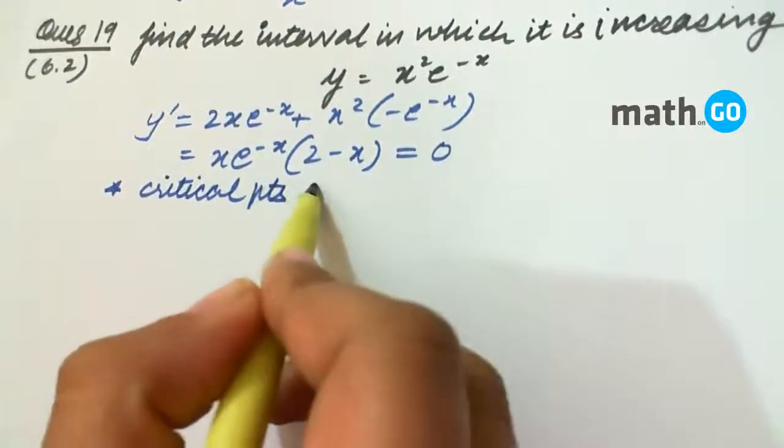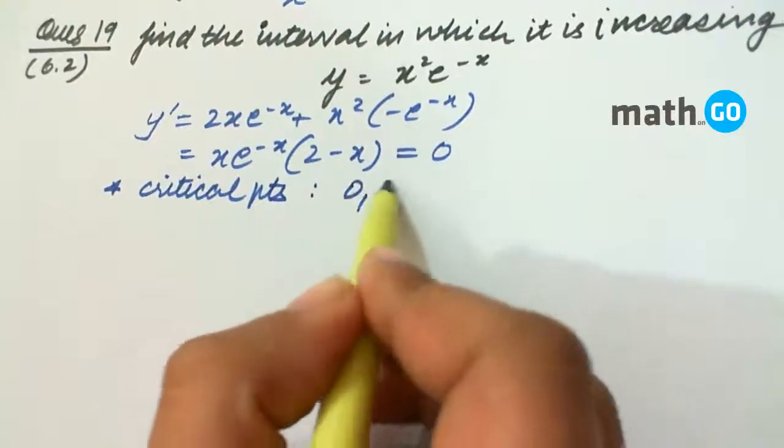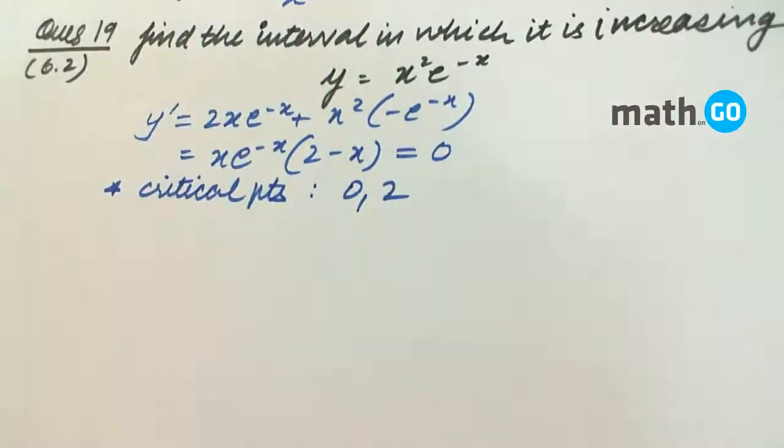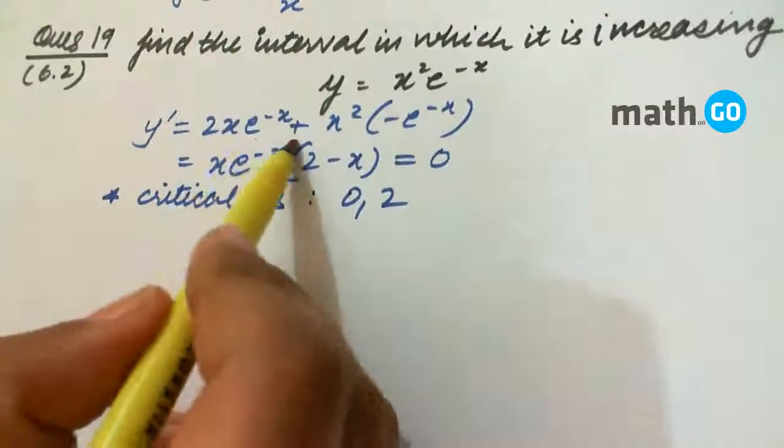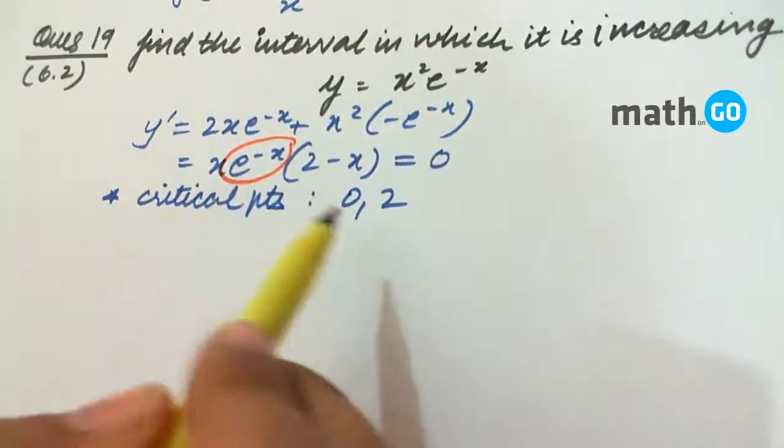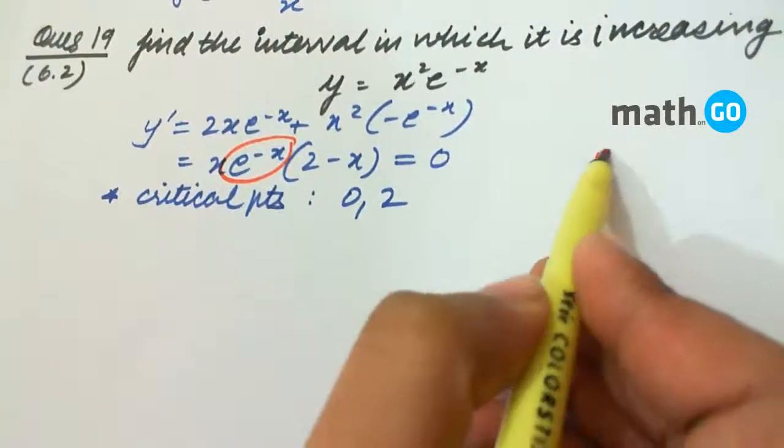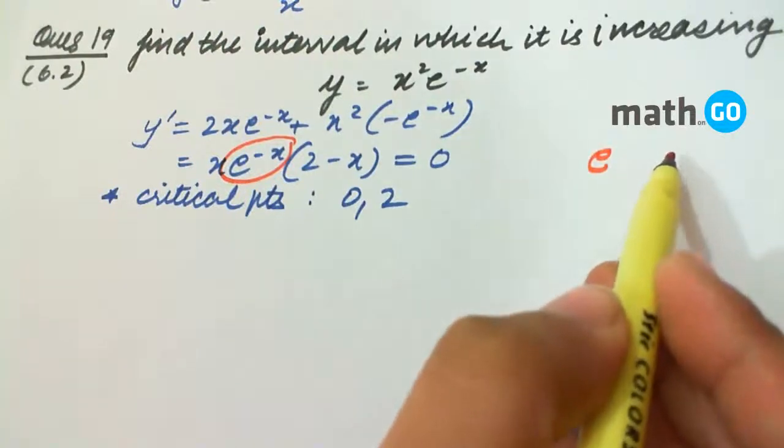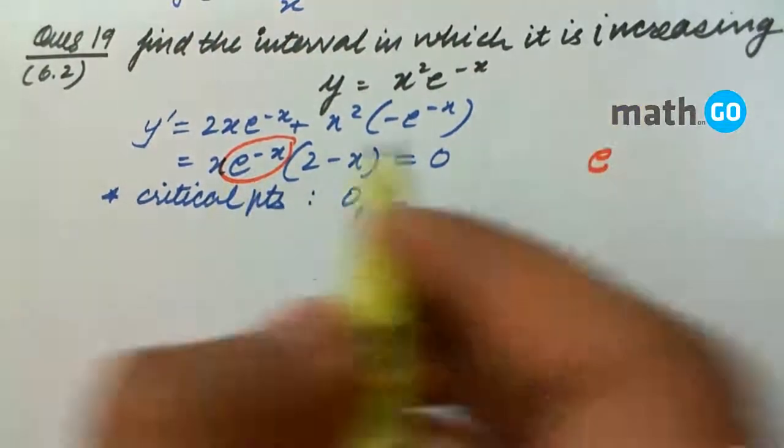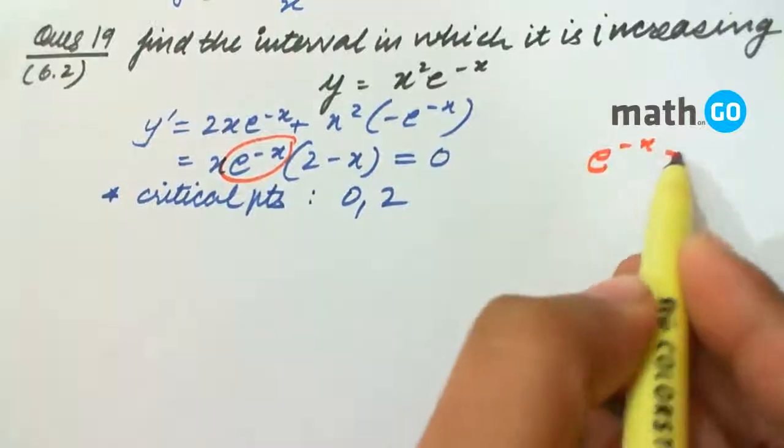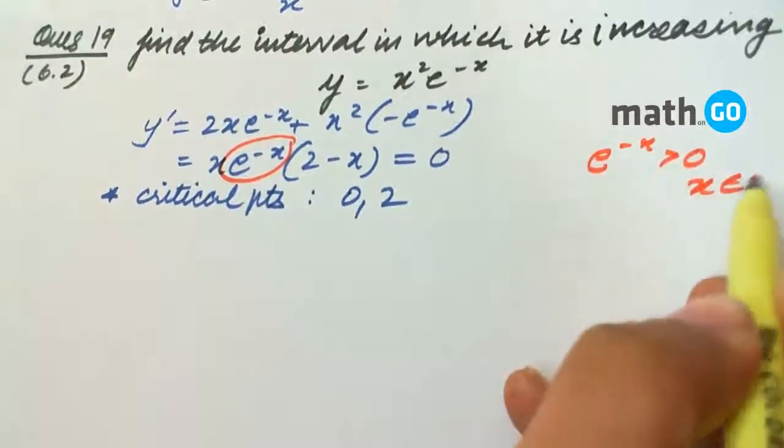Here the critical points are 0 and 2. One thing to be noticed is this quantity is always positive. e is actually a number, approximately 2.7, so e^(-x) is greater than 0 for all x.